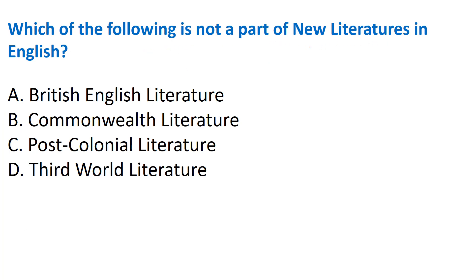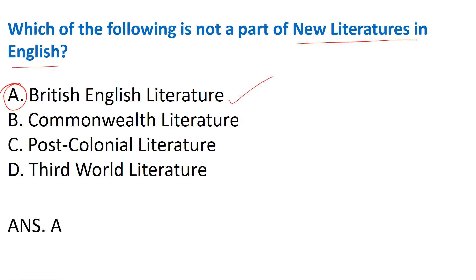Next question: 'Which of the following is not a part of new literatures in English?' Options: A) British English literature, B) Commonwealth English literature, C) Post-colonial English literature, D) Third World literature. The correct answer is Option A - British English literature is not included in 'new literatures in English.' Commonwealth literature, post-colonial literature, and third world literature are all part of new literature studies.